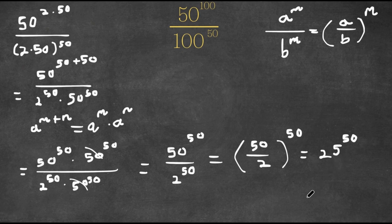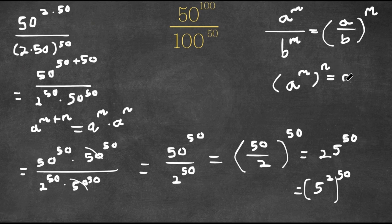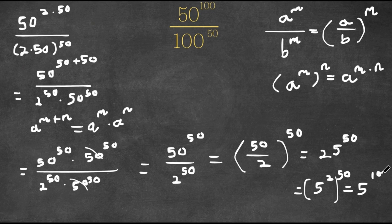Now 25 is the same thing as 5 squared, so this is equal to 5 squared to the power of 50. And if we have something in the form a to the power of m to the power of n, this is equal to a to the power of m times n. So this is going to equal 5 to the power of 2 times 50, which is simply just 5 to the power of 100. So this is our answer.